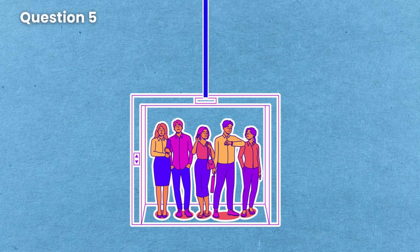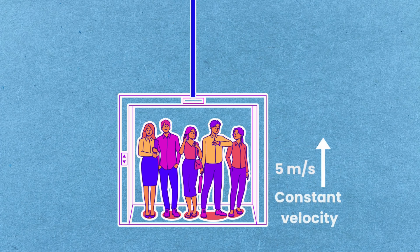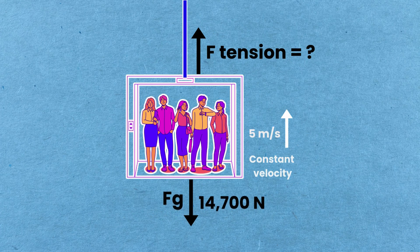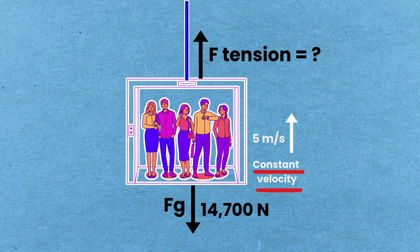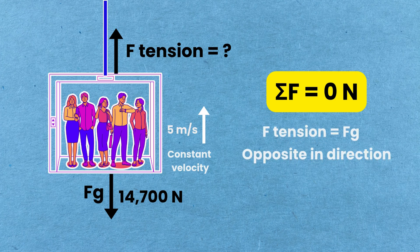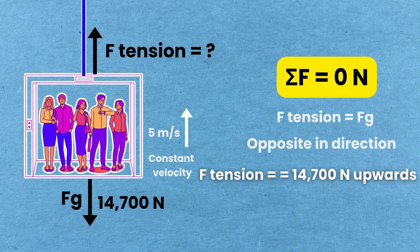Question 5: An elevator is moving upward at a constant velocity of 5 meters per second. Calculate the tension force in the cable supporting the elevator if the downward gravity force acting on the elevator is 14,700 newtons. As the elevator is moving at a constant velocity, the net force acting on the elevator equals zero newtons. The tension force and the gravity force are equal and opposite. So tension force equals 14,700 newtons upwards.